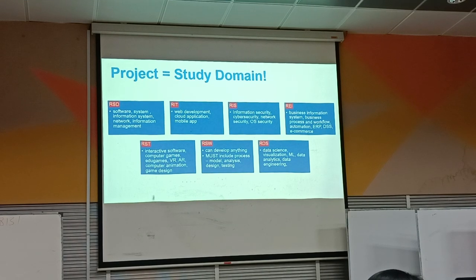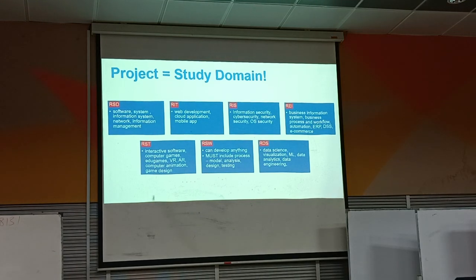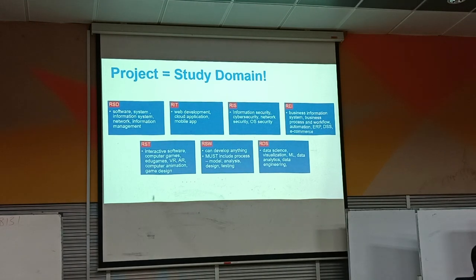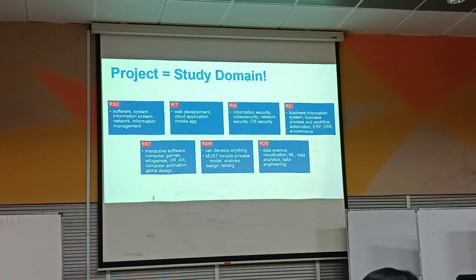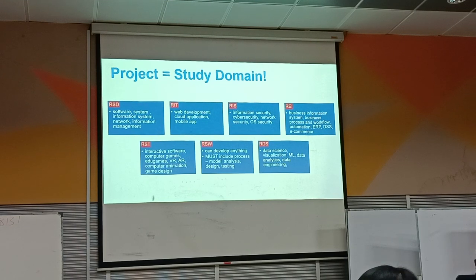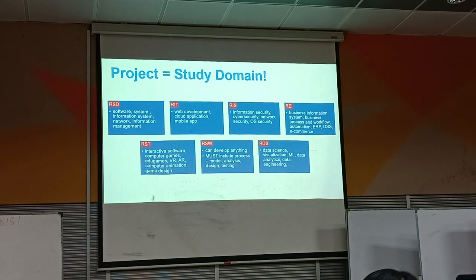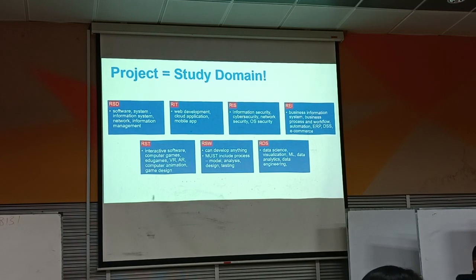If in Project 1 your report says you will develop an app using Python, but after further study you find it can be easily developed using Java, you are allowed to change. Don't stick to the original plan. When you do FYP 2, just update chapter 2 of your report to state you are using Java. Simple as that.